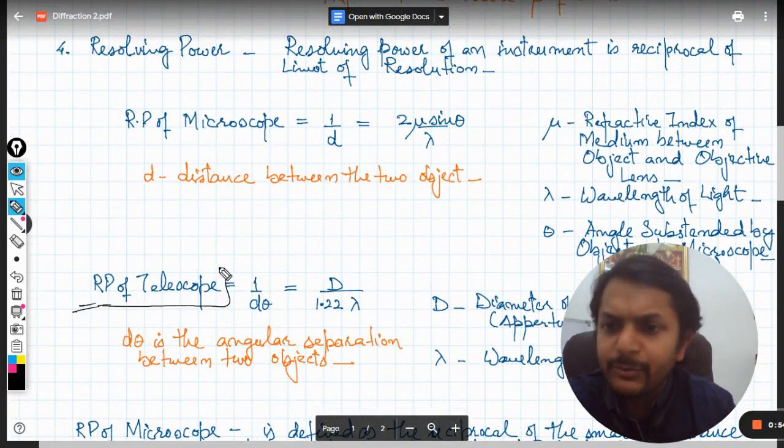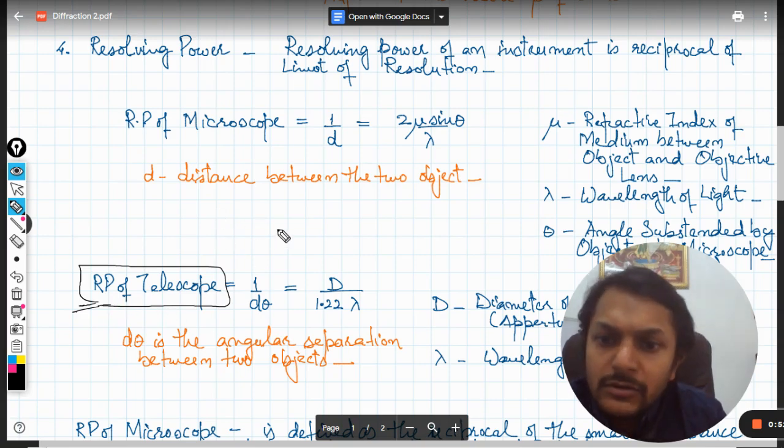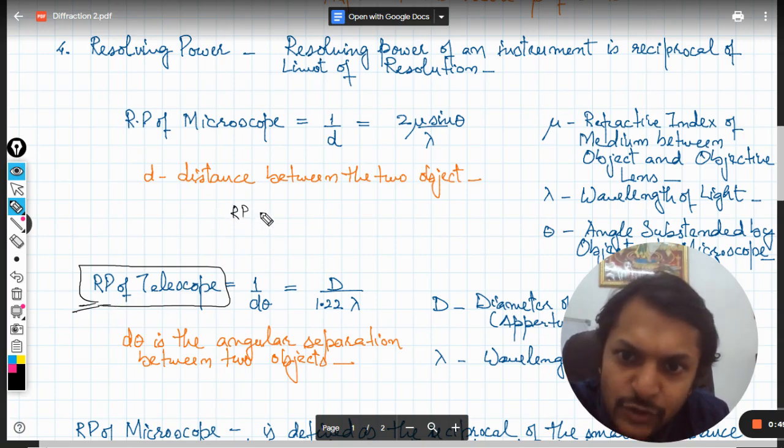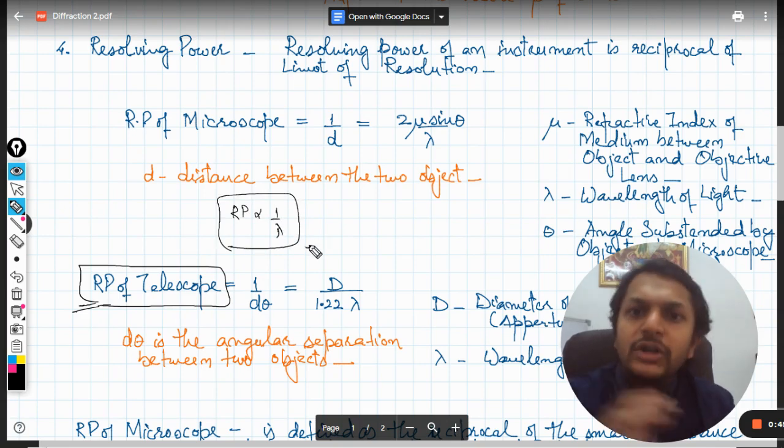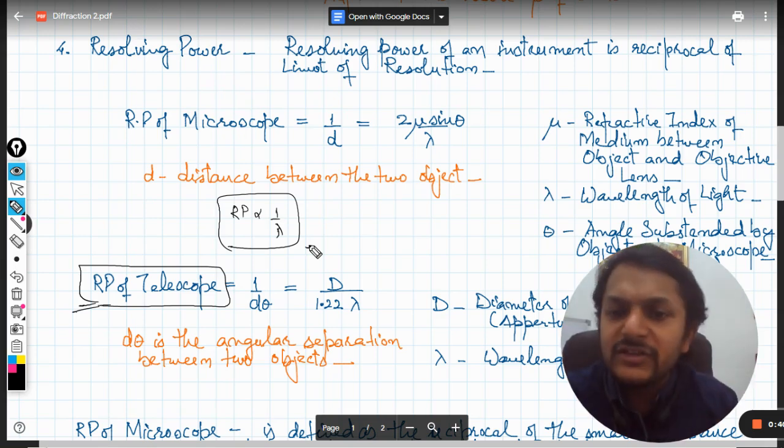Point to be noted is that the resolving power is inversely proportional to wavelength. So more is the wavelength, lesser is the resolving power, and lesser is the wavelength, more will be the resolving power.